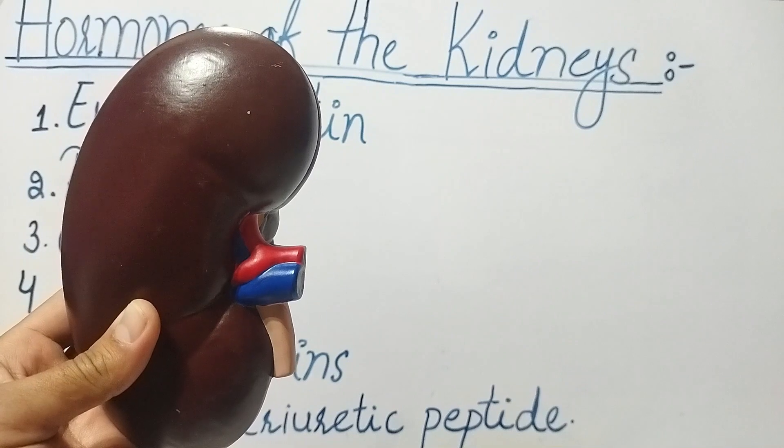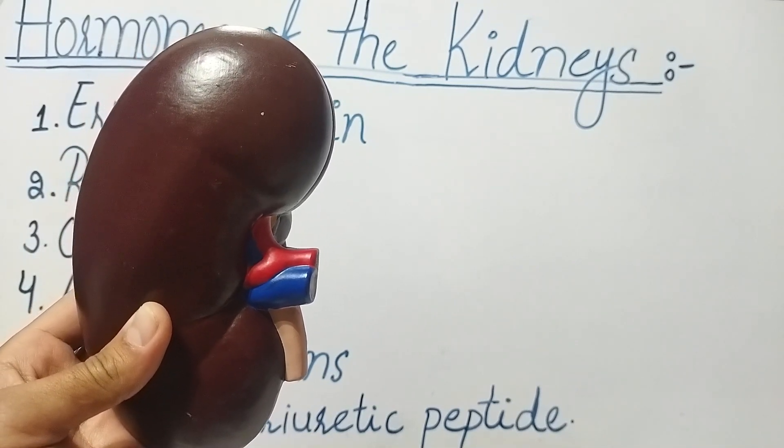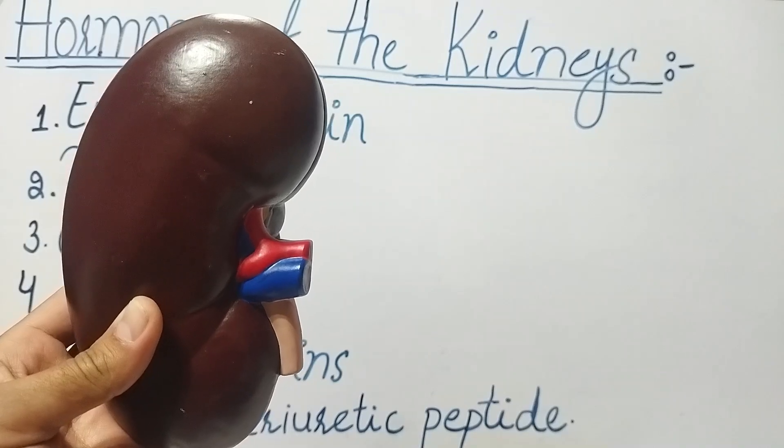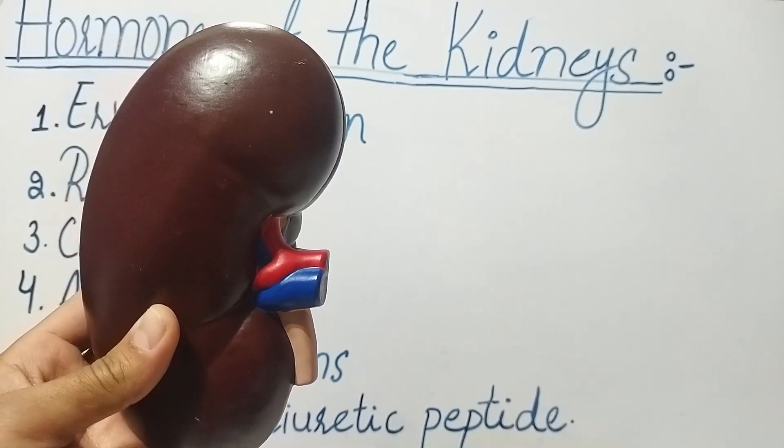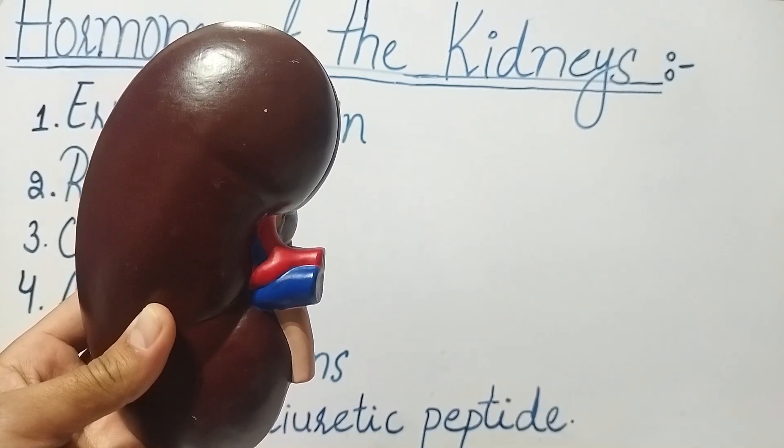The kidneys produce several hormones that play important roles in the body. We will talk about one by one. Number first: erythropoietin. Erythropoietin stimulates the production of red blood cells which carry oxygen to tissues and organs.